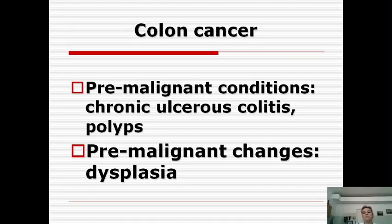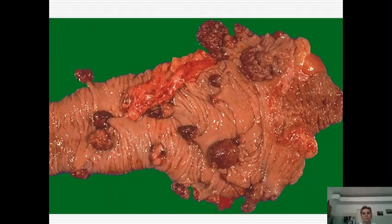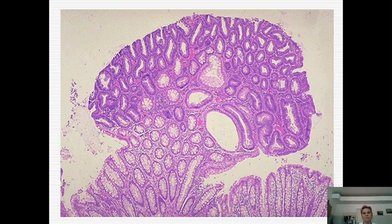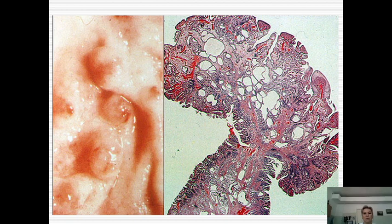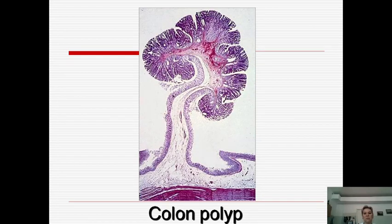The next type of cancer is colon cancer. Pre-malignant conditions include chronic ulcerative colitis and polyposis — including familial polyposis with mainly polyps in the colon. Pre-malignant cellular change is dysplasia. In this photo you can see familial polyposis of the large intestine — an obligatory pre-cancerous condition. Photos also show polyps at anatomical and histological examination, and a large colon polyp.